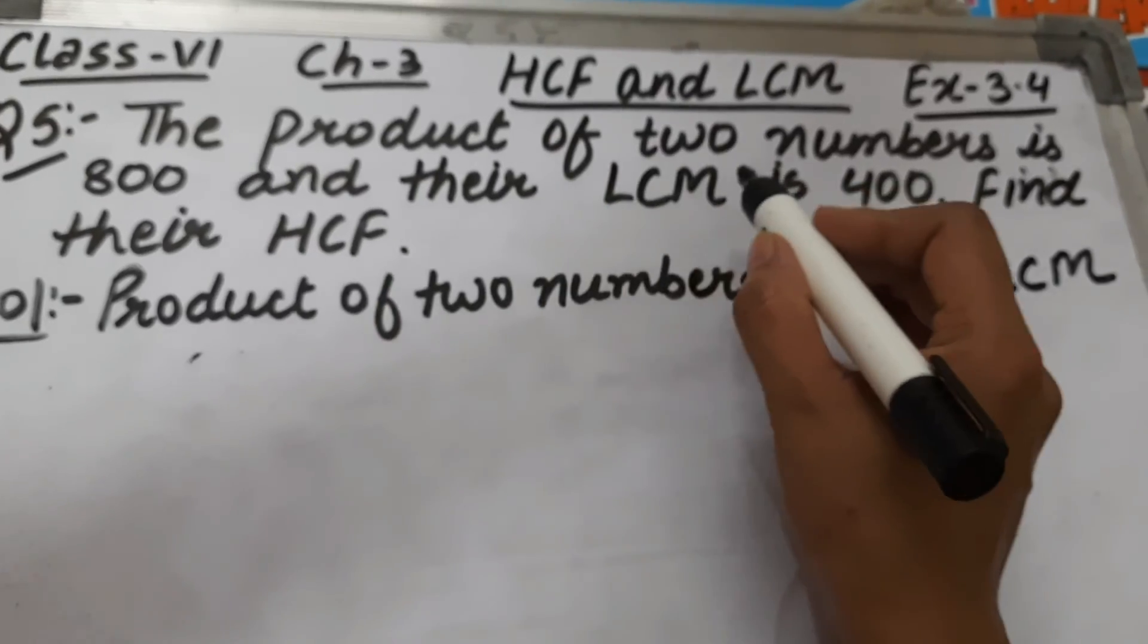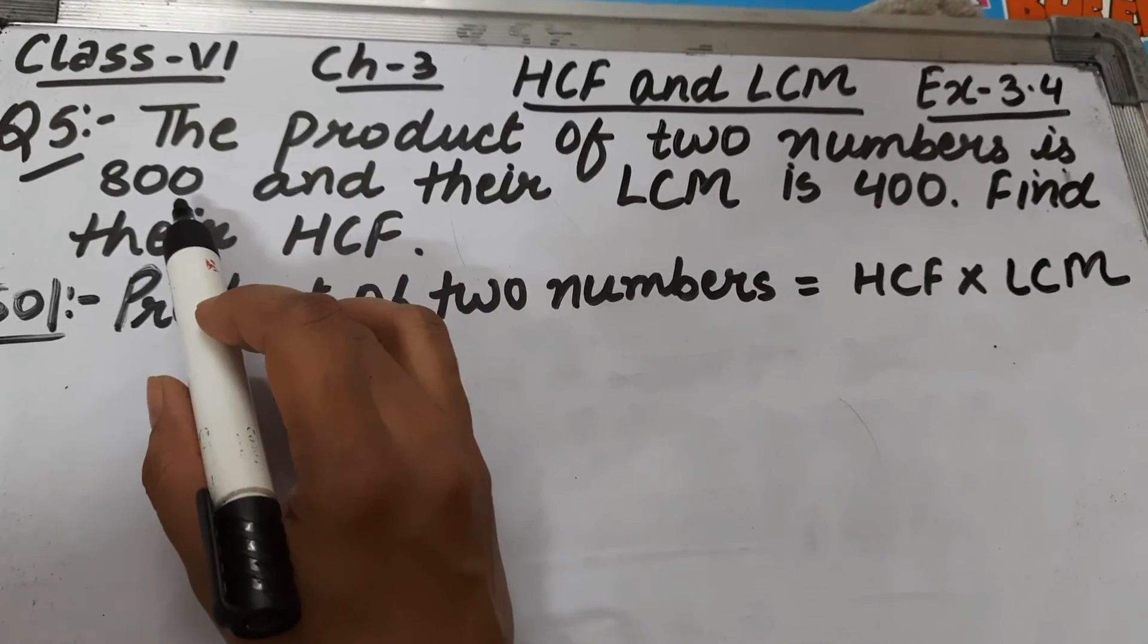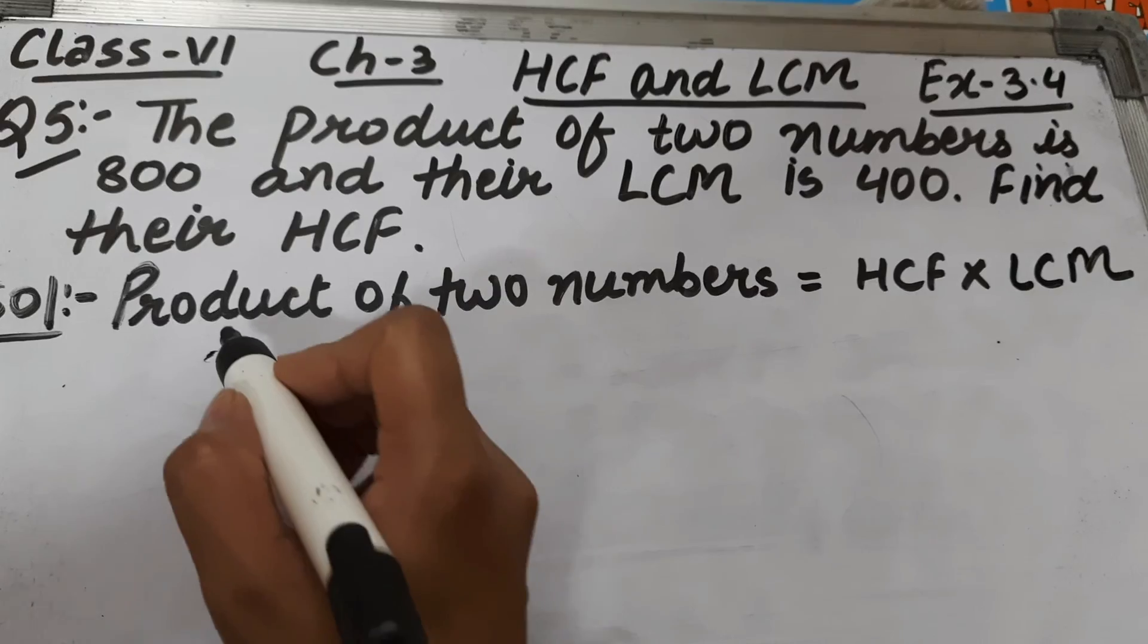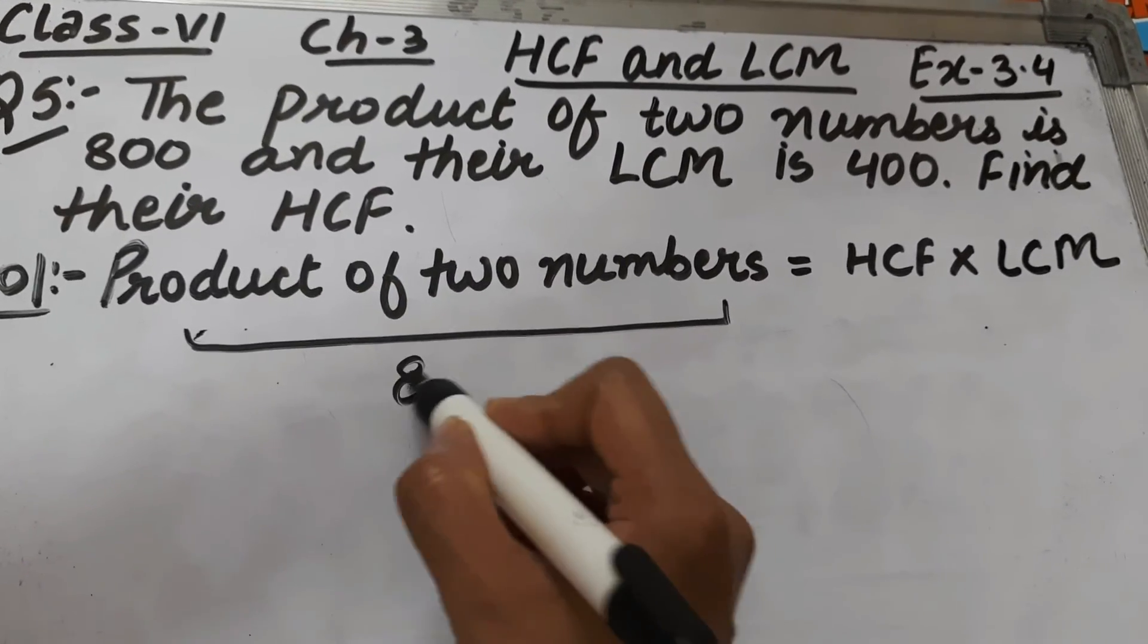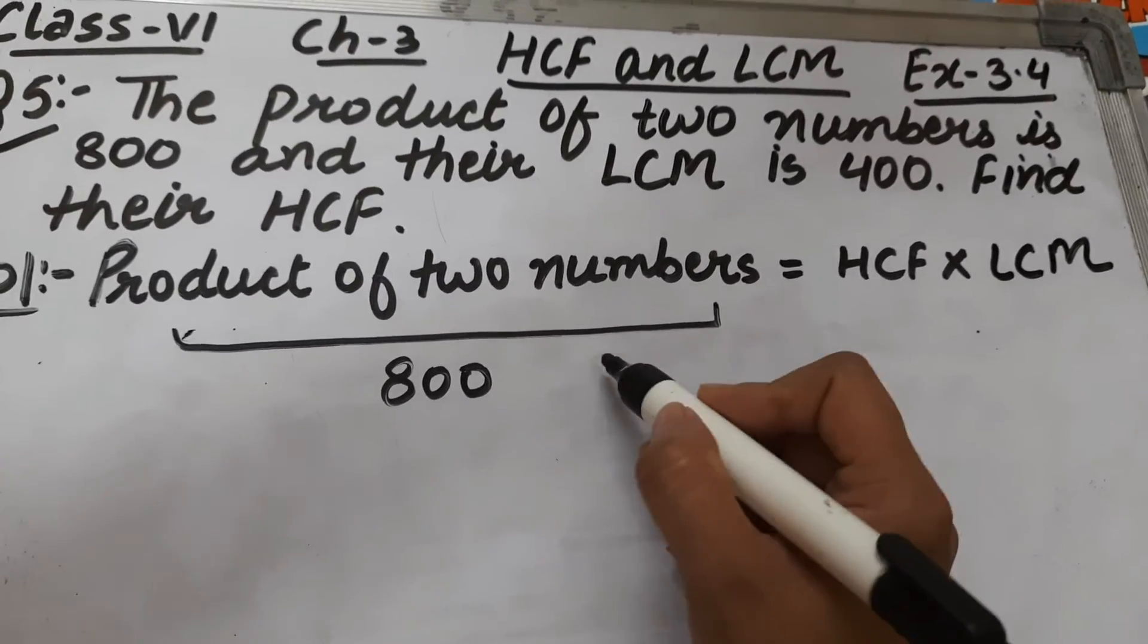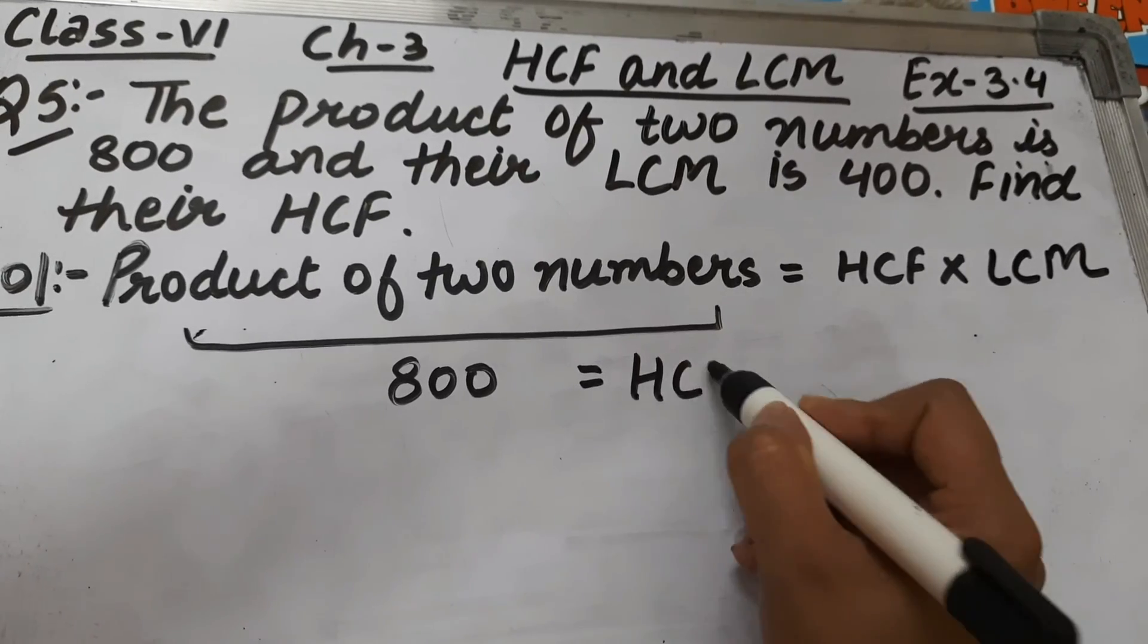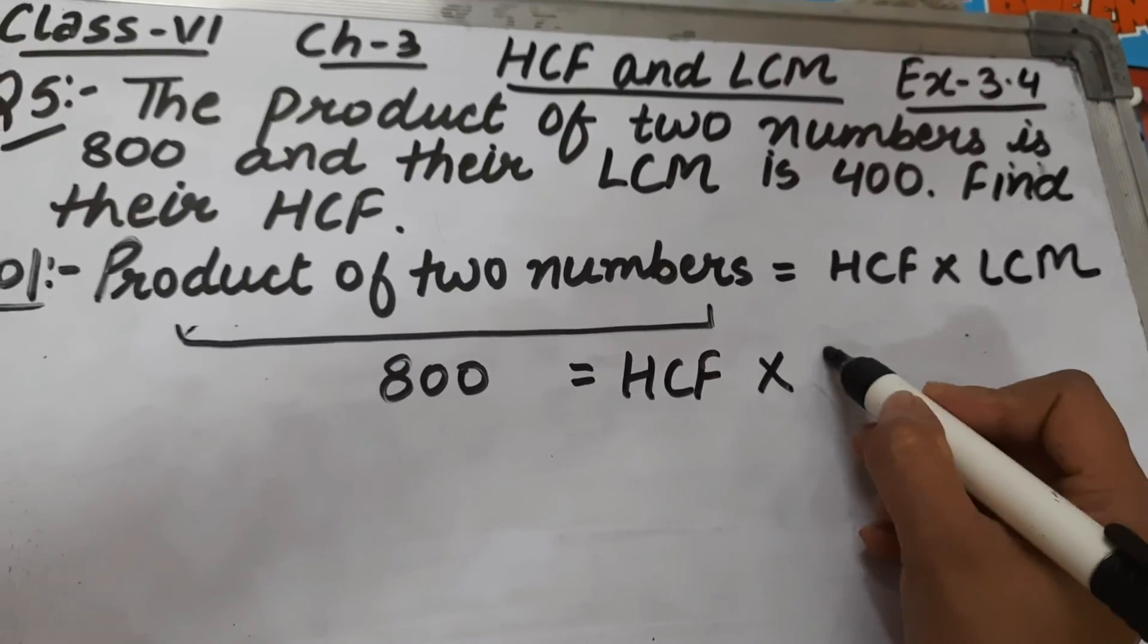Now in the question, the product of two numbers is given to us which is 800. That means this is given to us which is 800. HCF we have to find out, and LCM is given to us as 400.